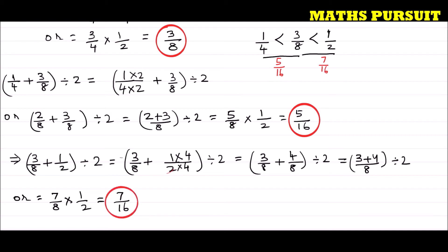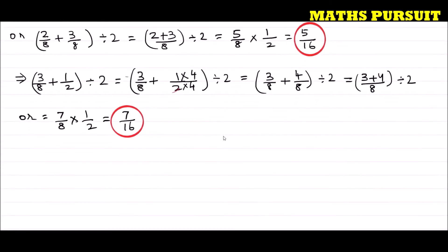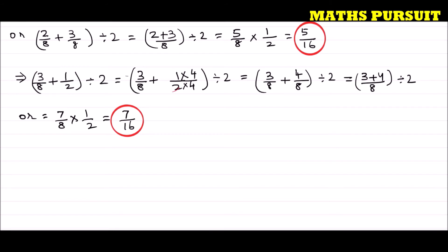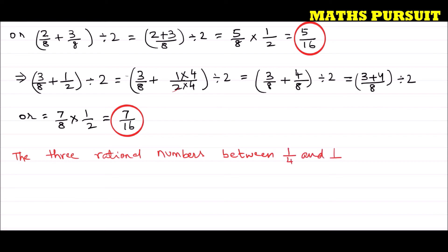We are now able to find all three rational numbers. The three rational numbers between 1/4 and 1/2 are 5/16, 3/8, and 7/16.